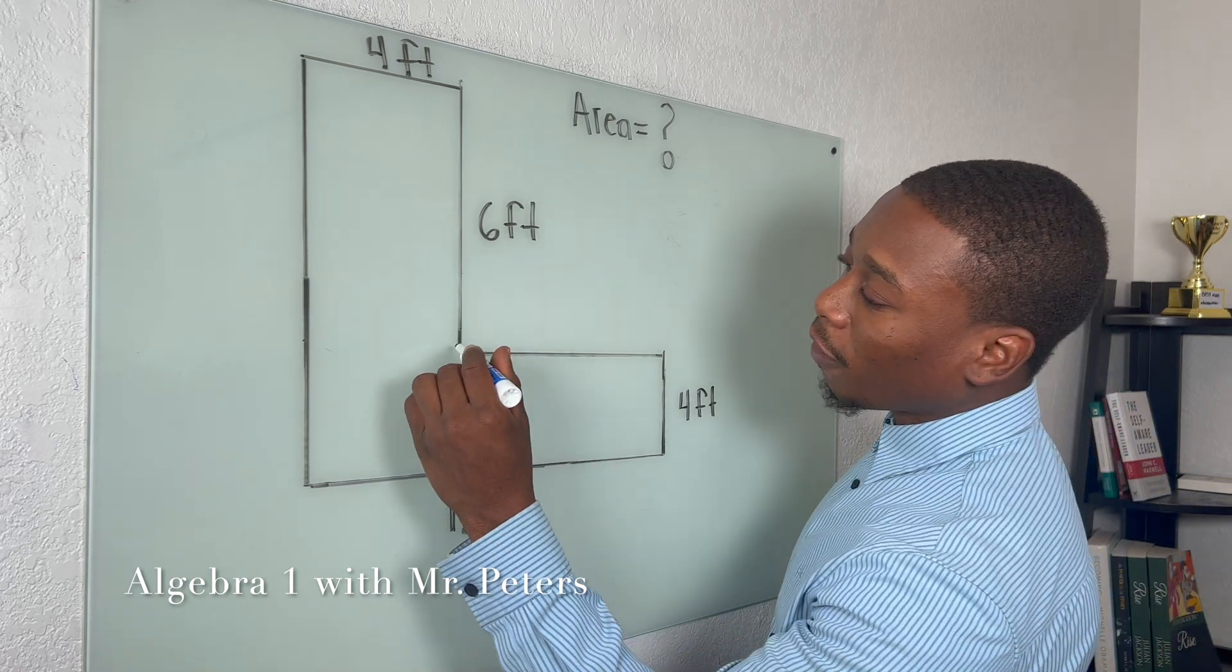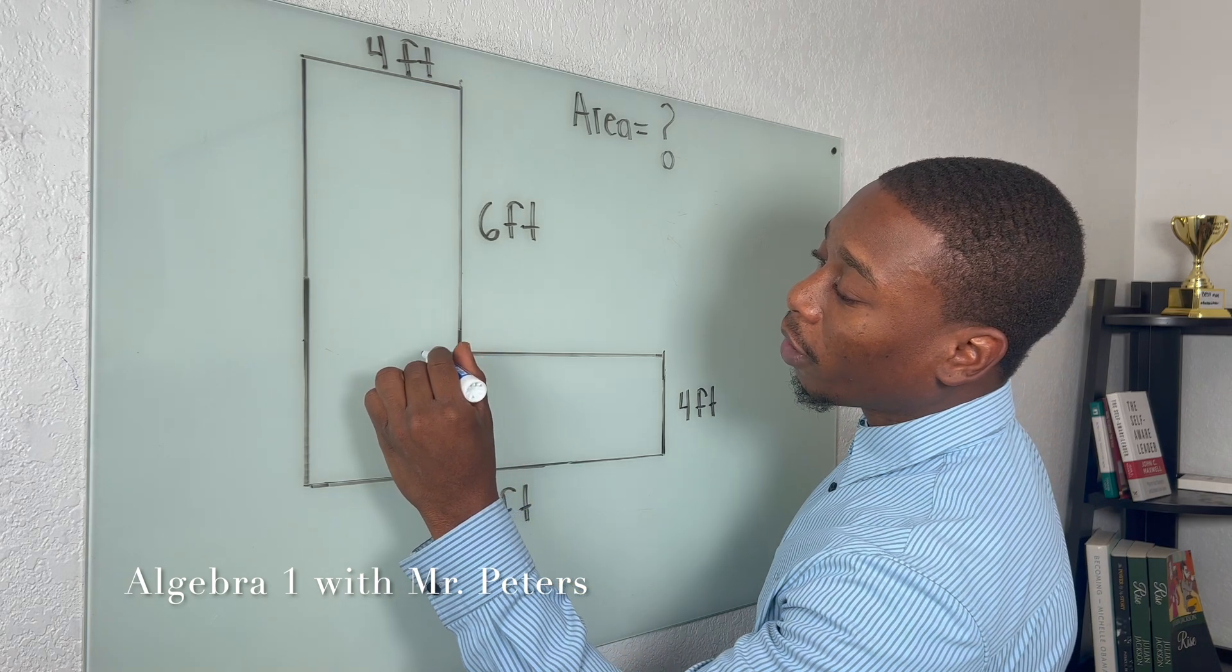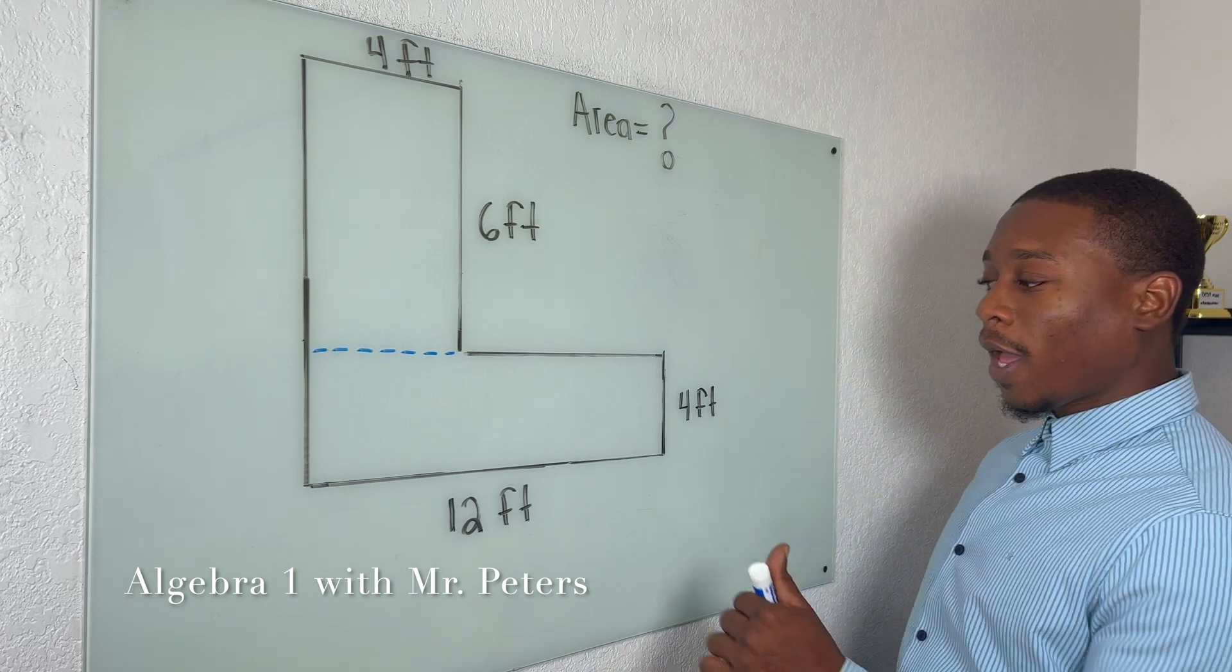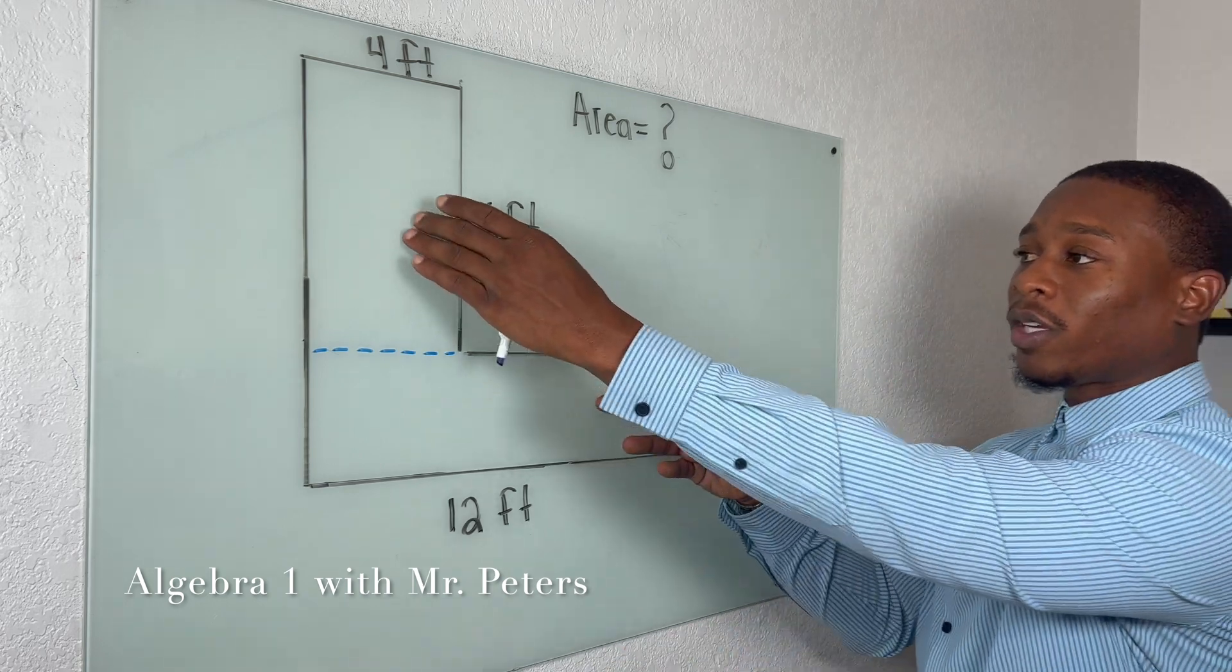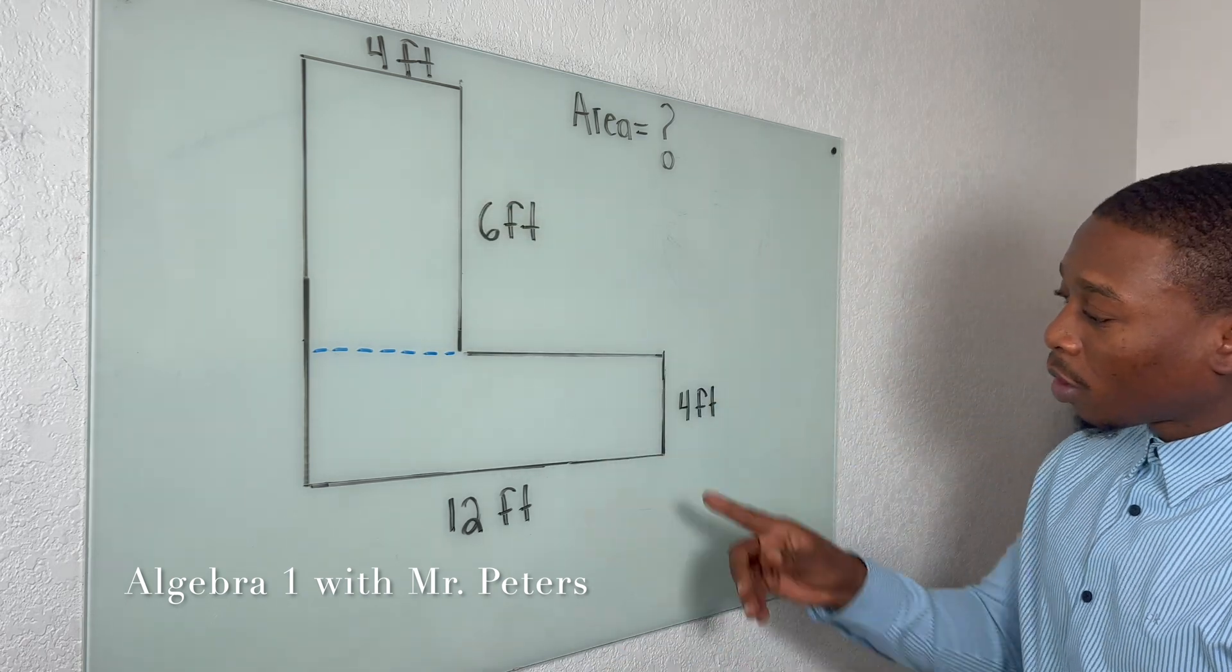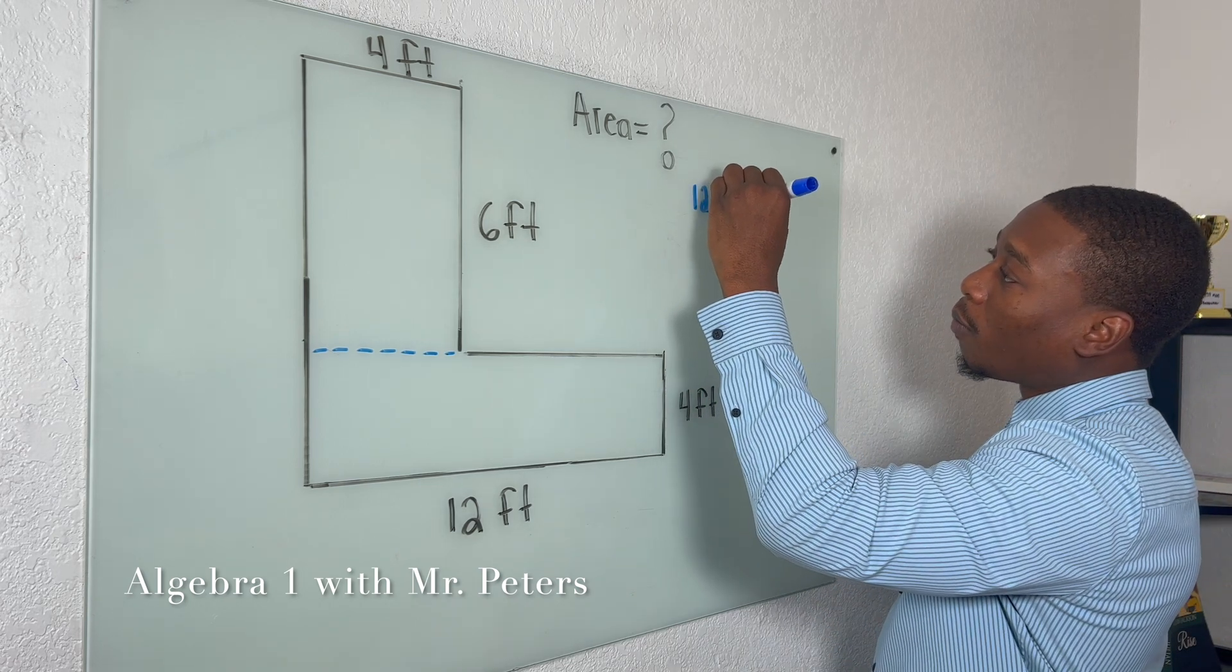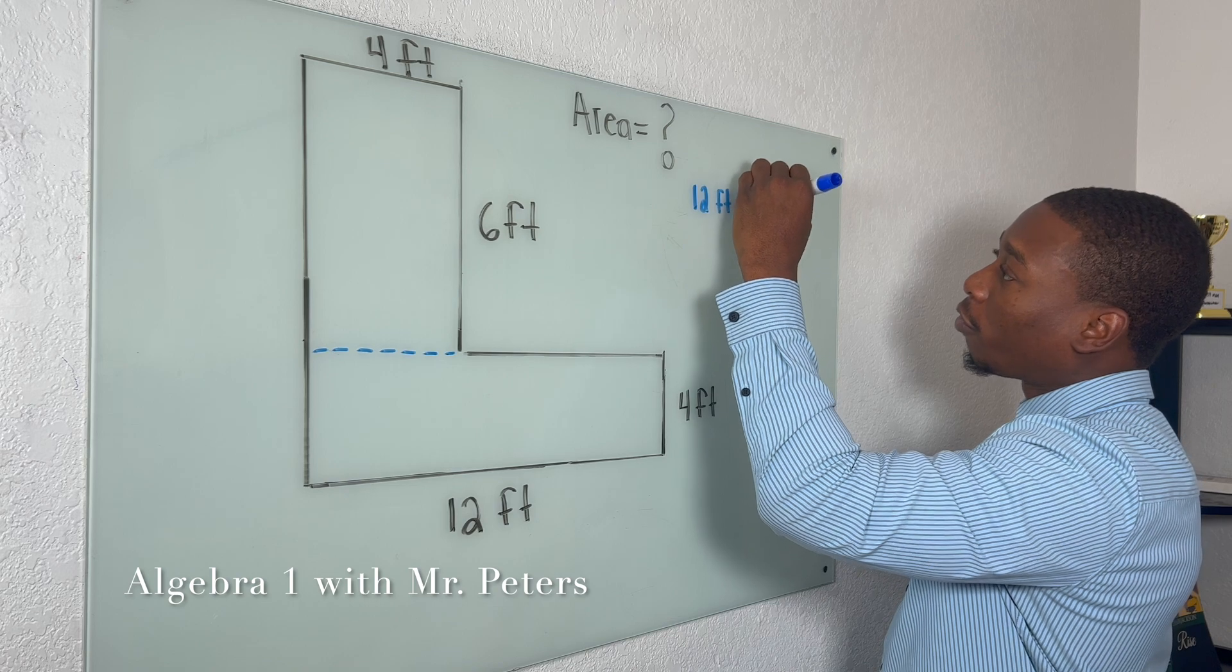So what that means is if I come here and I block this off or divide these two rectangles, what I'm going to have is two different rectangles where I can find the area. So in the first one, we're going to have 12 feet multiplied by four feet.